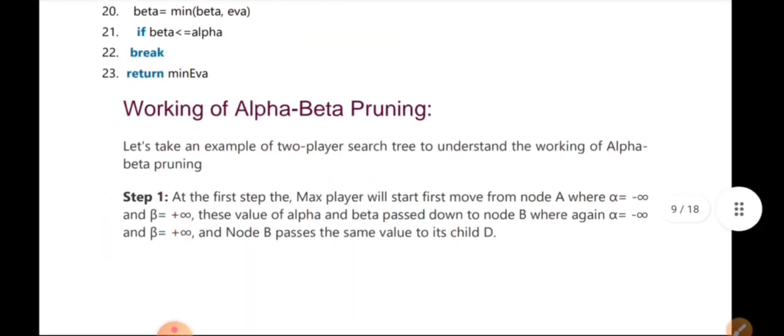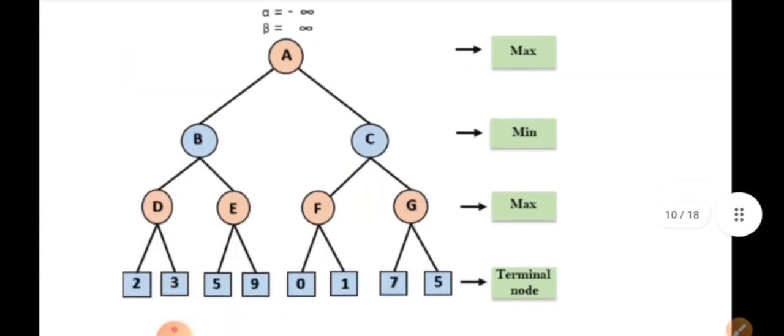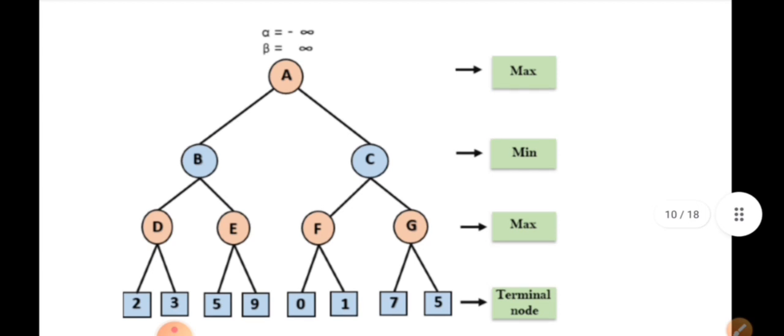If you want to do an example, we will try alpha and beta. Basically, we have a tree. We will make a node alternative: the maximum node A, minimum node B, maximum nodes D, F, G, and the last one. We will get terminal nodes. What we have to do is take the root node. A is the root node. We will do alpha and beta.